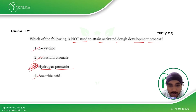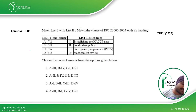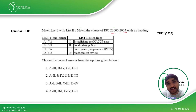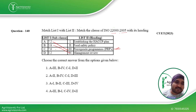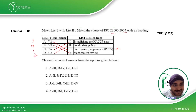Then we have to match the clauses of ISO 22000:2005 with their headings. Clause 7.2 is for prerequisite programs (PRP), so that's third. Clause 5.8 is for management review. Clause 7.6 is for establishing the HACCP plan. And clause 5.2 is for food safety policy. So the correct sequence is 3, 4, 1, 2 — which is the first option and therefore the right answer.